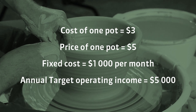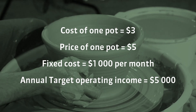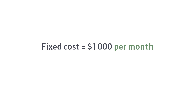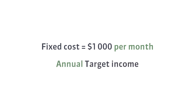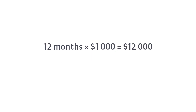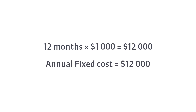At the beginning, please note that the fixed cost is given as a monthly value and the question is about operating income per year. For this reason we need to establish the annual value of the fixed cost. To do this, let's multiply our monthly fixed cost by the number of months in the year. Now we know the value of fixed cost per year.